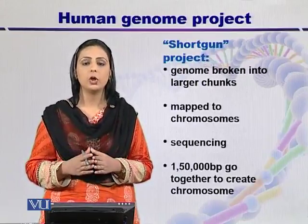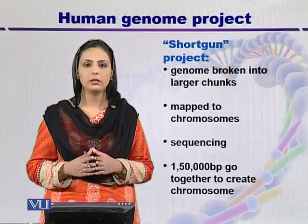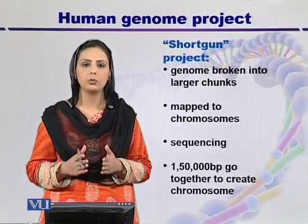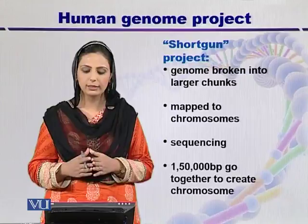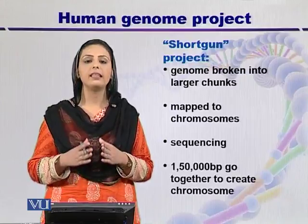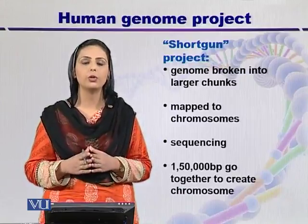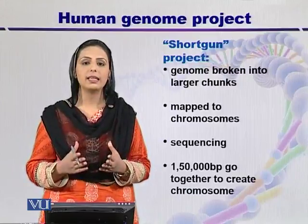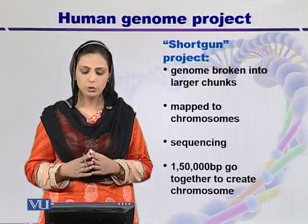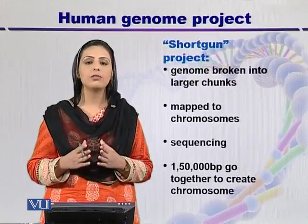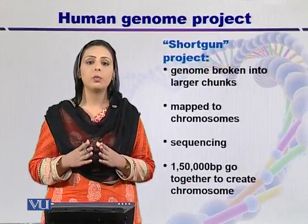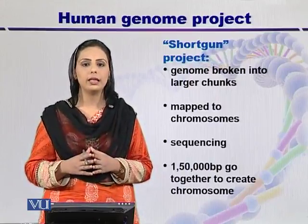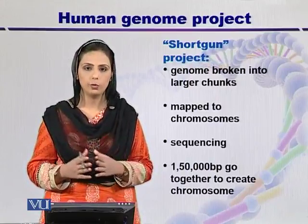CELRA used the shotgun method, whereby the genome was converted into smaller pieces, and these pieces were then mapped onto the chromosome before being sequenced. It was found that 150,000 base pairs can go together to create the whole chromosome.